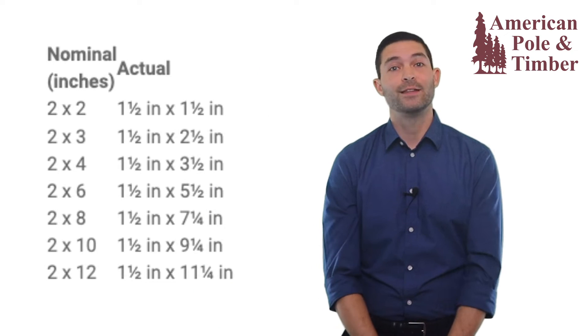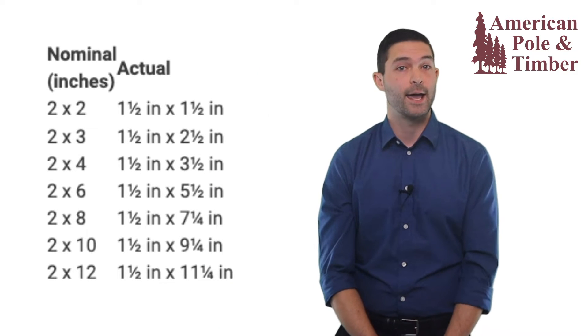The nominal dimensions are the common descriptors we use for lumber. These are some examples of the common 2x nominal dimensions and their actual dimensions. 2x2 is actually 1.5 inches by 1.5 inches.